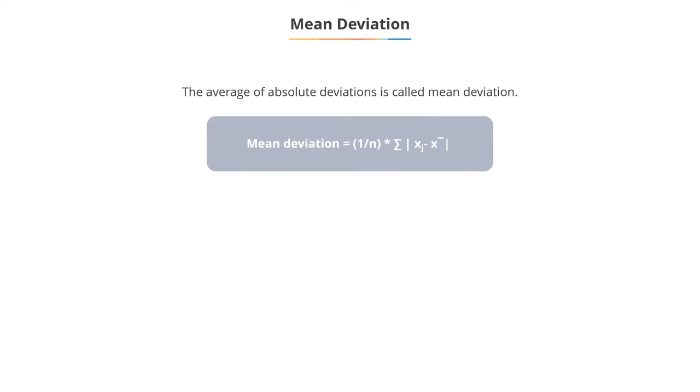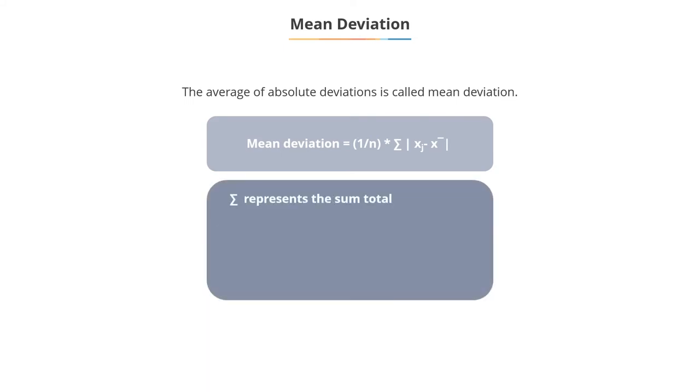The mean deviation is obtained by the formula on screen. Sigma represents the sum total. X represents observations. X bar represents mean. N represents the number of observations.